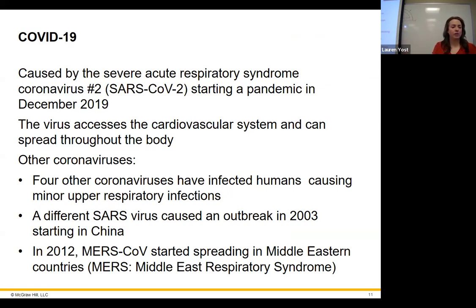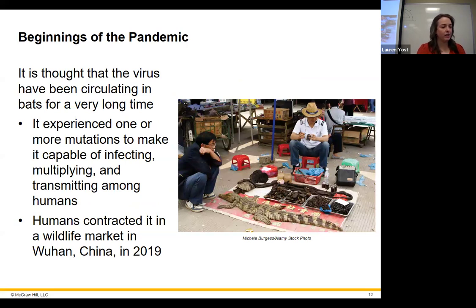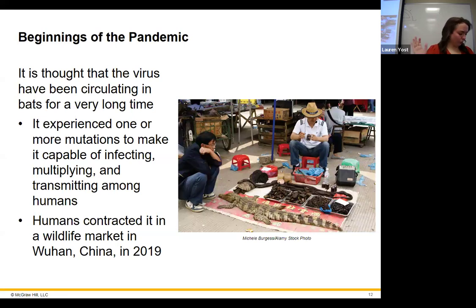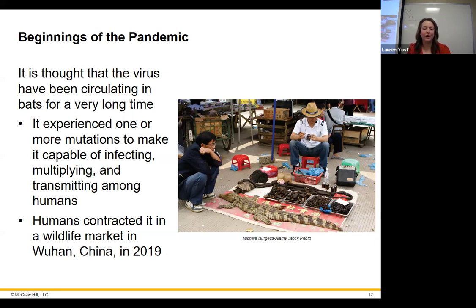COVID-19 — we know this is SARS-CoV-2, recognized in December 2019. The textbook says bats were the natural source and that humans contracted it in a wildlife market in Wuhan, China. Whether it was contracted in a wildlife market is debatable. It did come out of Wuhan, China, and the general consensus now is that it came from a laboratory in Wuhan.